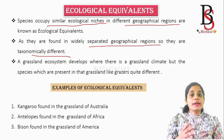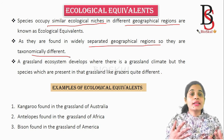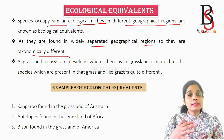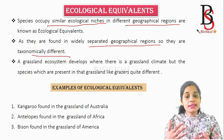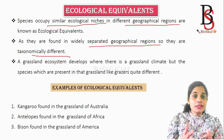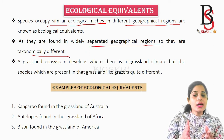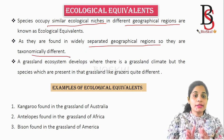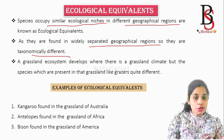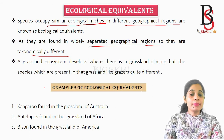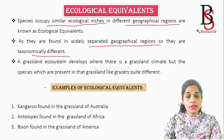A grassland ecosystem develops where there is a grassland climate. Similarly, a desert ecosystem will develop where there is a desert type of climate, but the species present — for instance the grazers in a grassland — are quite different from one geographical region to another. Now we will see some examples of ecological equivalence.